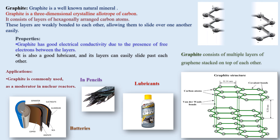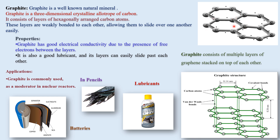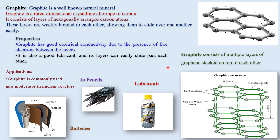When we are talking about graphite, it is a well-known natural mineral which has three-dimensional crystalline allotropes of carbon and it consists of layers of hexagonally arranged carbon atoms. These layers are weakly bonded with each other, which allows them to slide over one another easily.